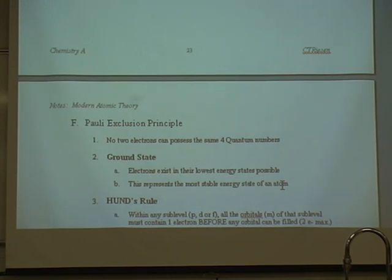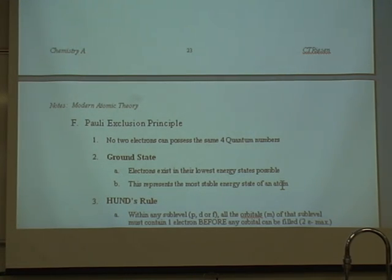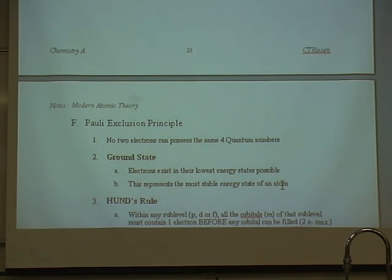The Pauli exclusion principle states that no two electrons can possess the same four quantum numbers. That's why we have four quantum numbers: the principal quantum number is the energy level, the secondary is the sub-level, the tertiary is the orbital, and the quaternary, or fourth quantum number, is the spin. Every single electron has separate quantum numbers. The ground state is when the electrons exist in their lowest energy states possible, and this represents the most stable energy state of the atom.